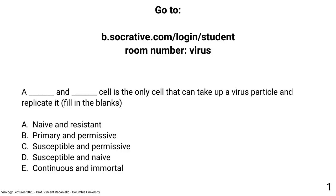Time for a question: a blank and blank cell is the only cell that can take up a virus and replicate it. The choices are: naive and resistant; primary and permissive; susceptible and permissive; susceptible and naive; or continuous and immortal. The answer: 100% of you got it — susceptible and permissive is correct.